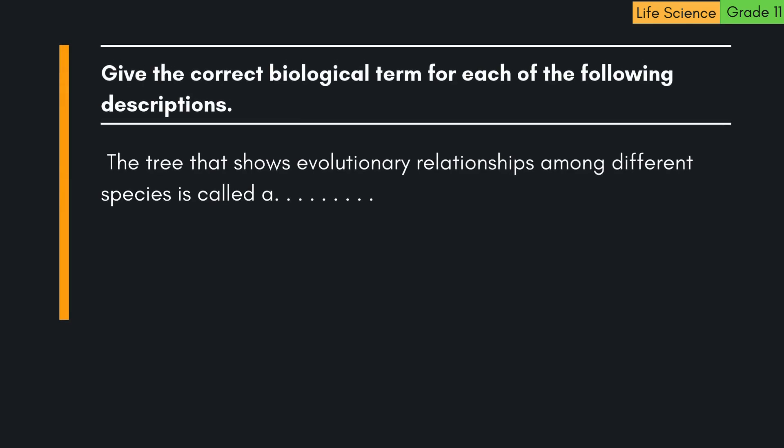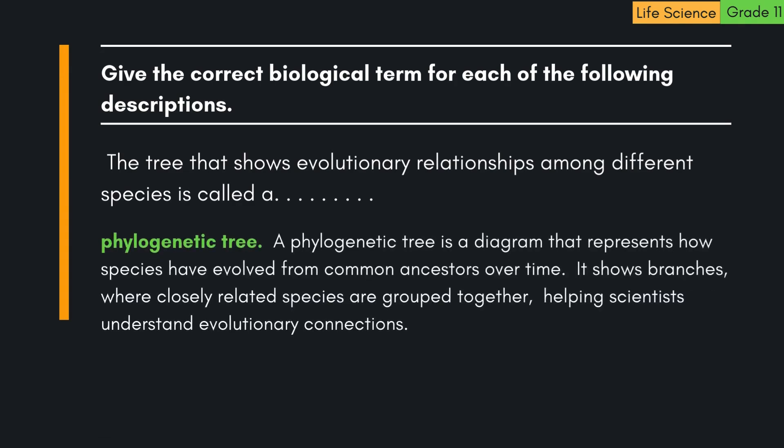The tree that shows evolutionary relationships among different species is called a phylogenetic tree. A phylogenetic tree is a diagram that represents how species have evolved from common ancestors over time. It shows branches where closely related species are grouped together, helping scientists understand evolutionary connections.